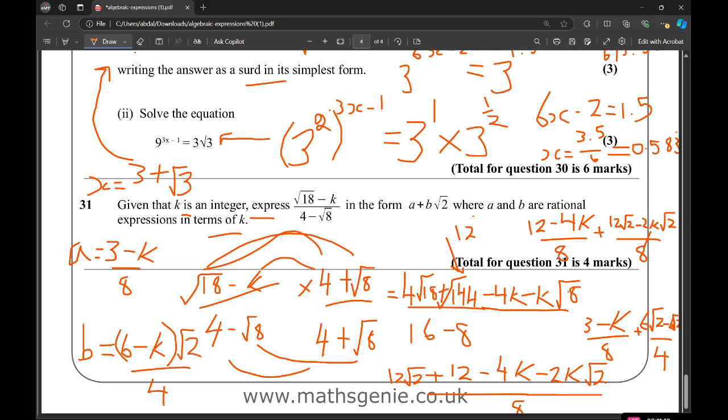So where A is equal to 3 minus K over 2, and then B will be equal to 6 minus K over 4, lots of root 2. And that, guys, is rationalizing the denominator. But we have something in terms of K, in terms of a letter.